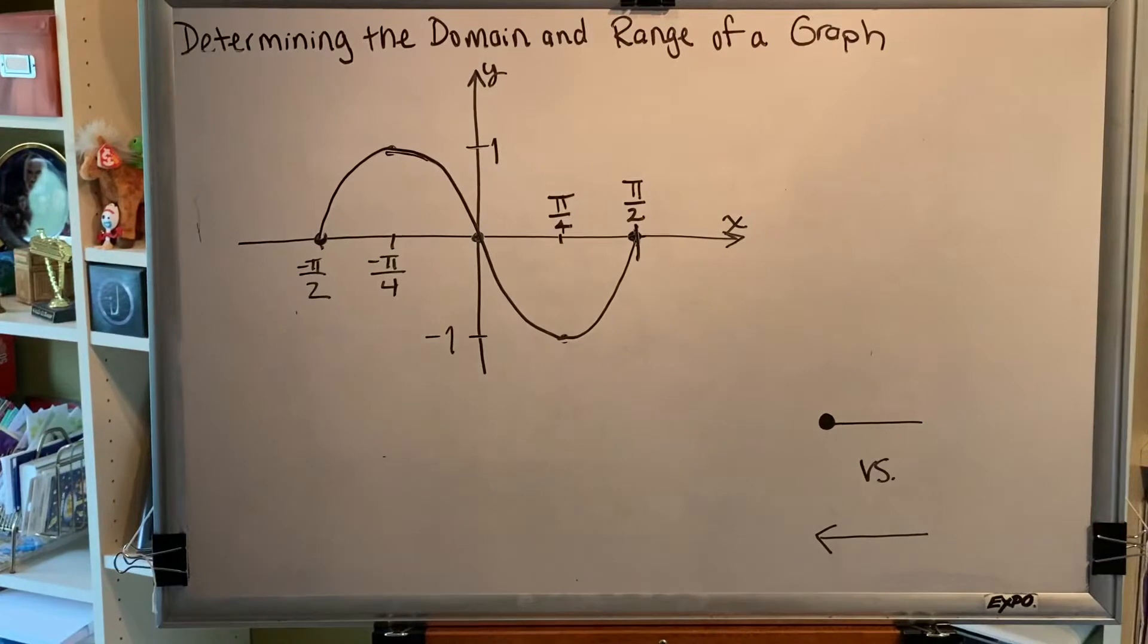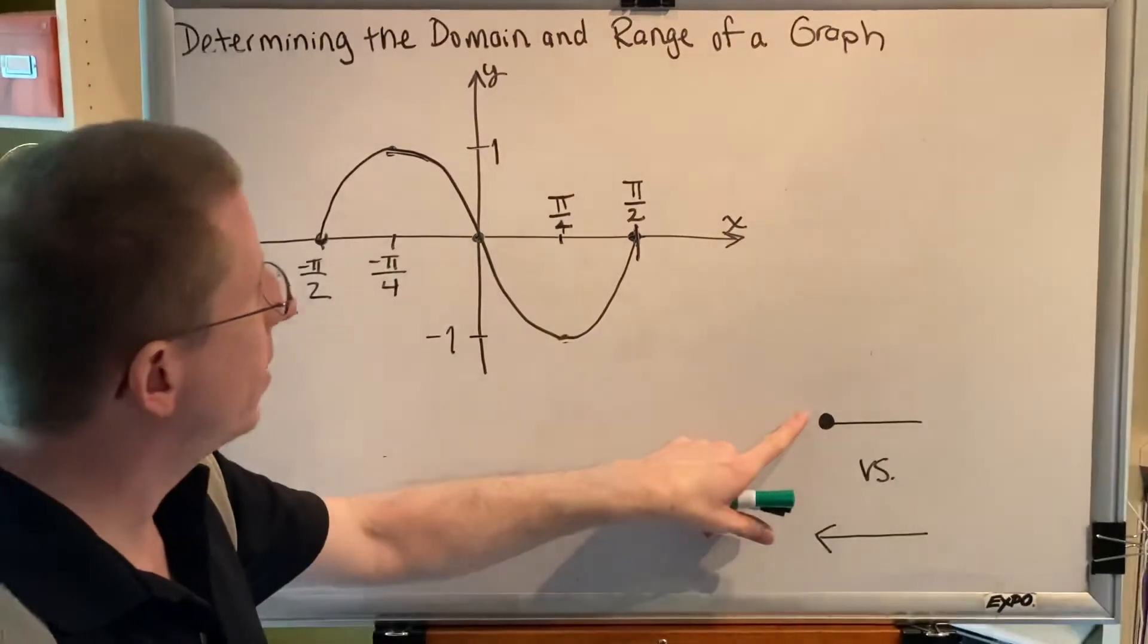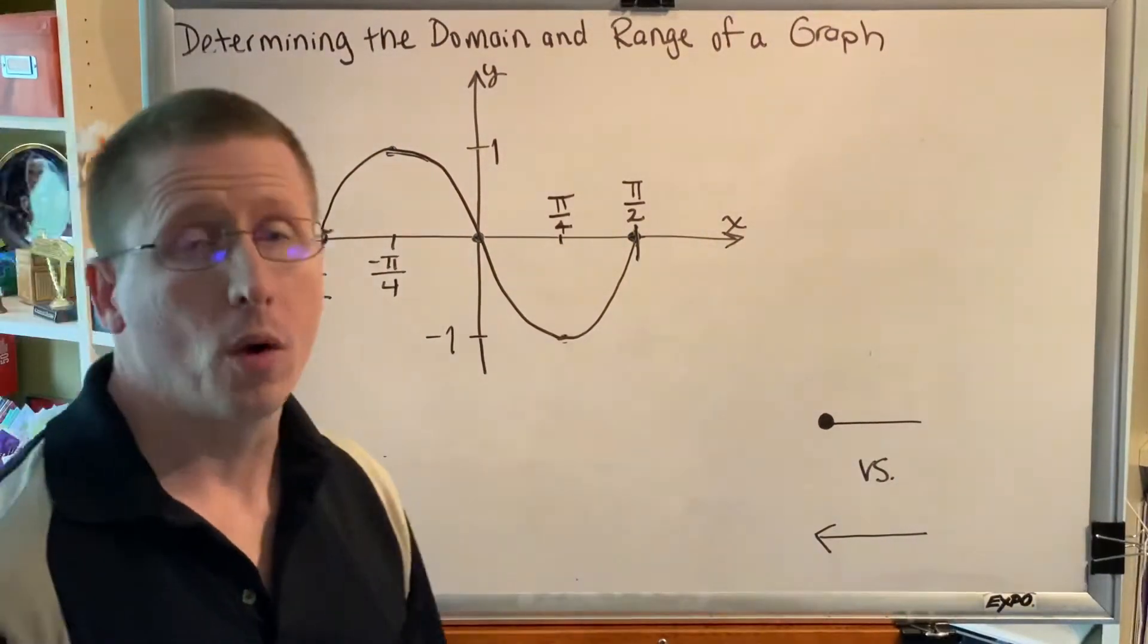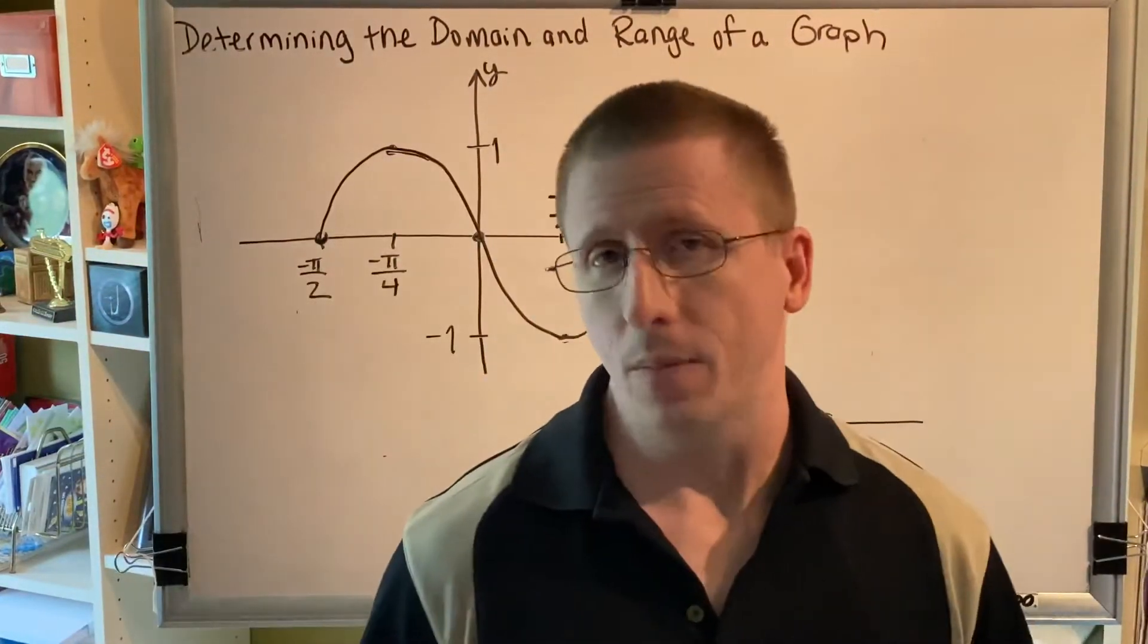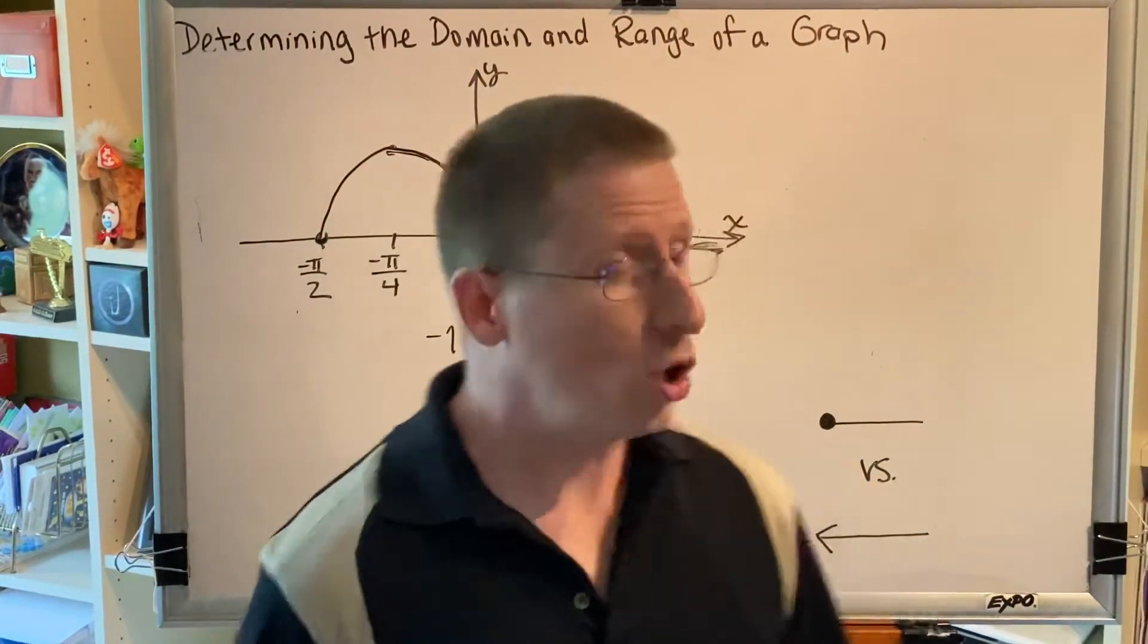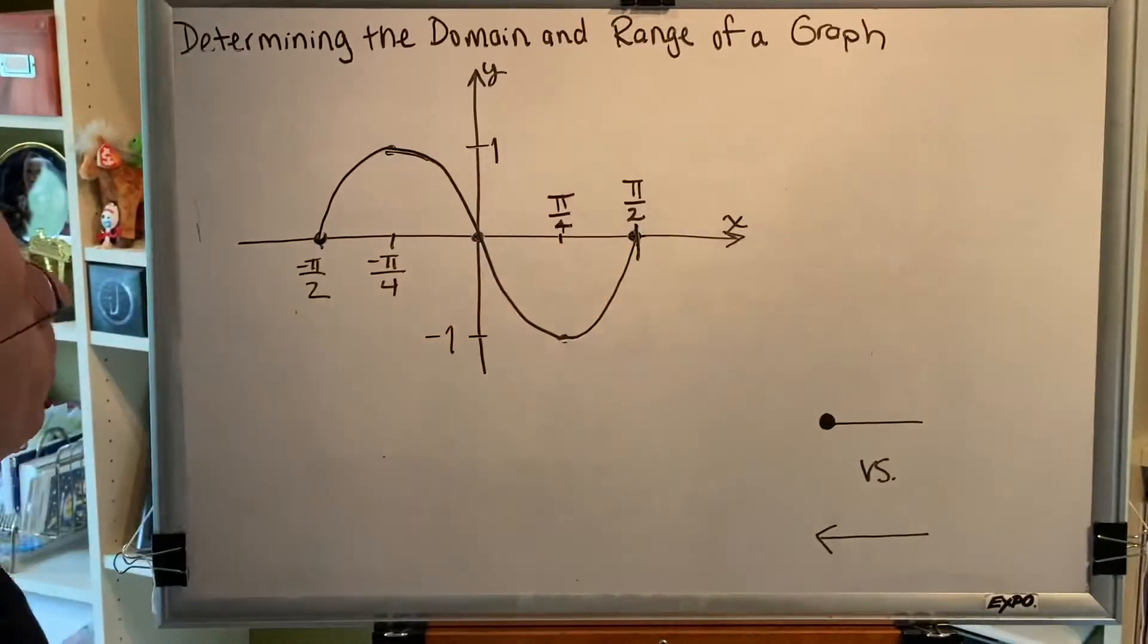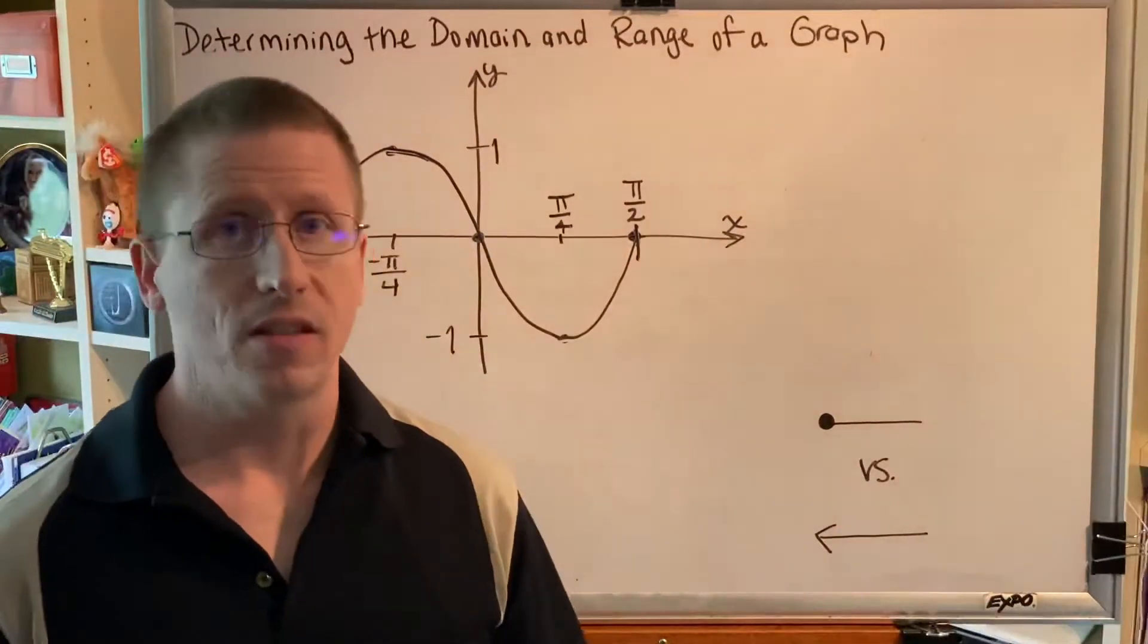So one of the things that you might notice about this graph is it has dots at the endpoints. So let's compare. What does it mean for there to be a dot at an endpoint as opposed to an arrow? A dot is a starting and stopping point. An arrow indicates that it continues on. So what that's telling me is that this graph starts at negative pi over 2 and goes all the way to pi over 2. It starts and stops.